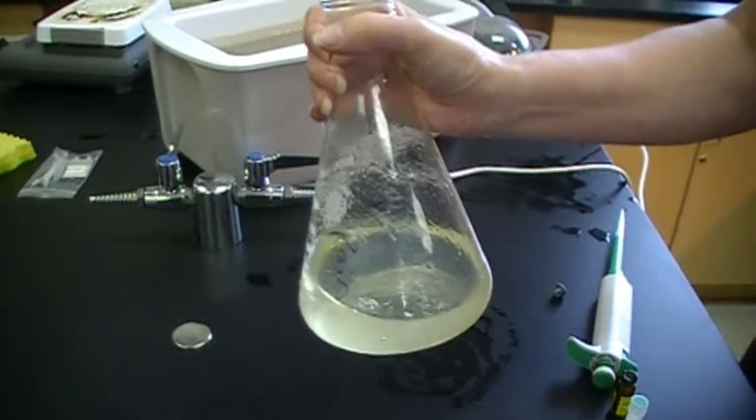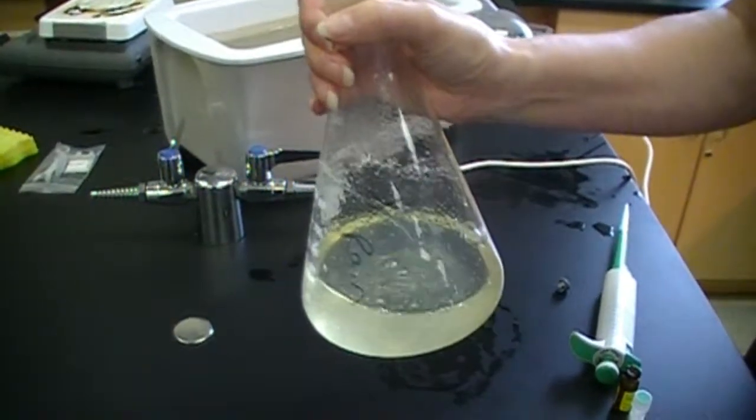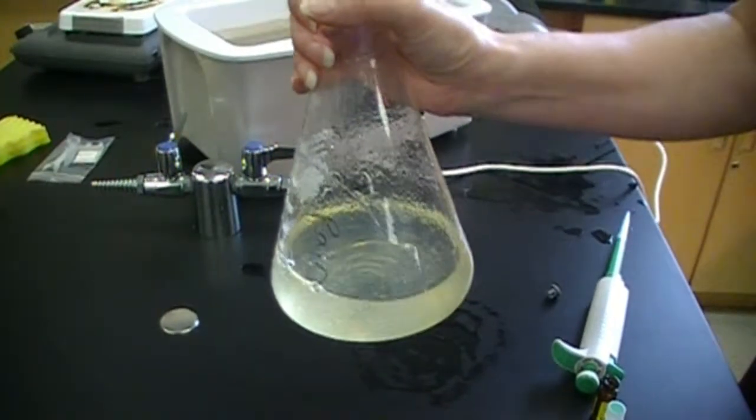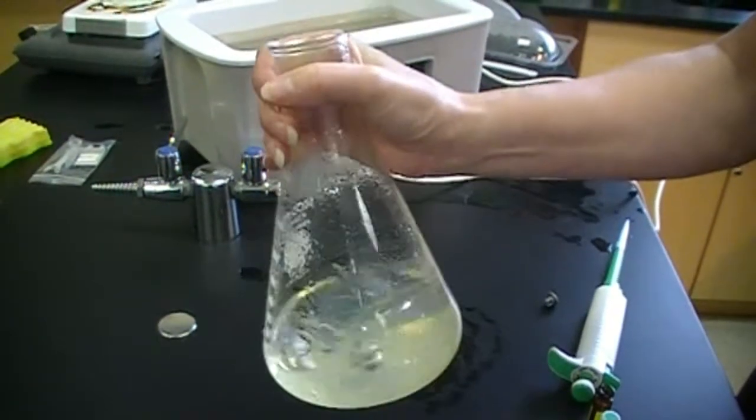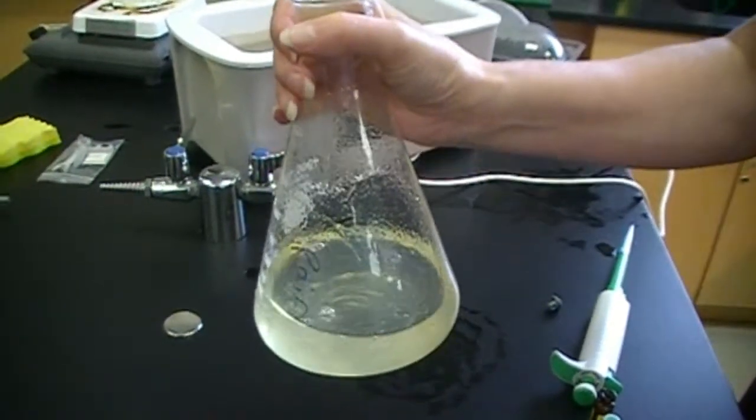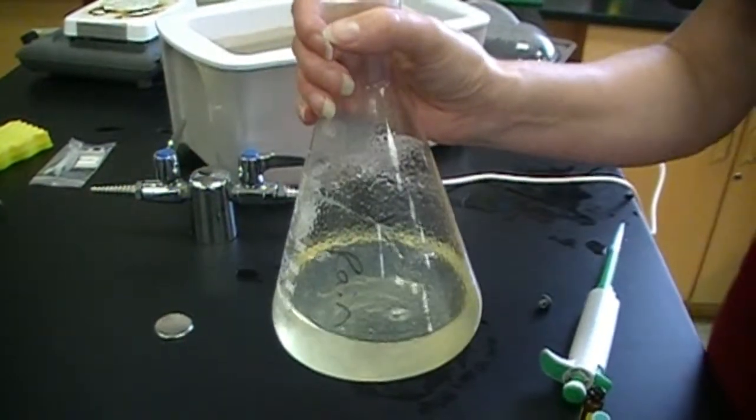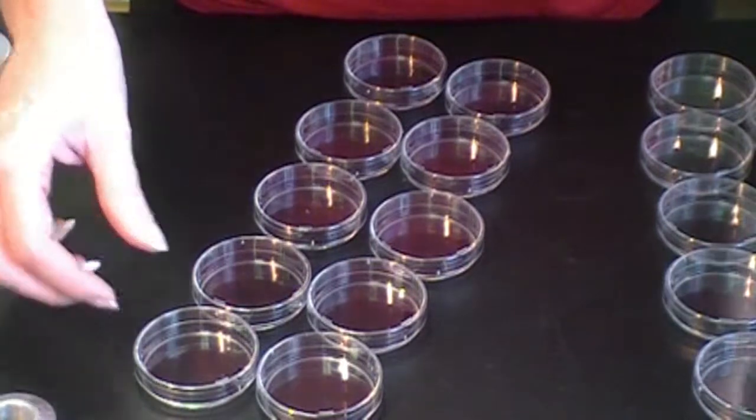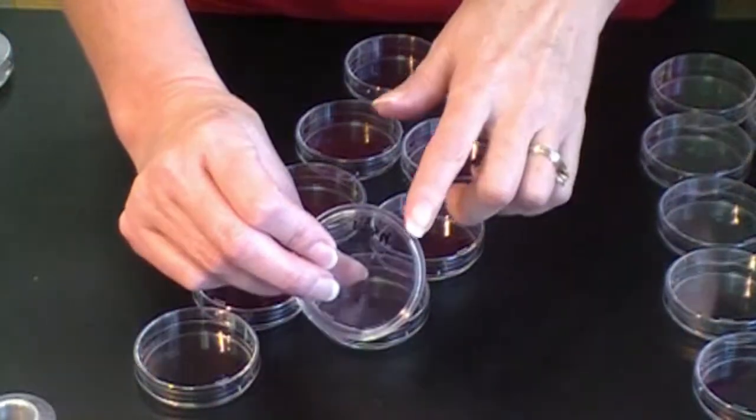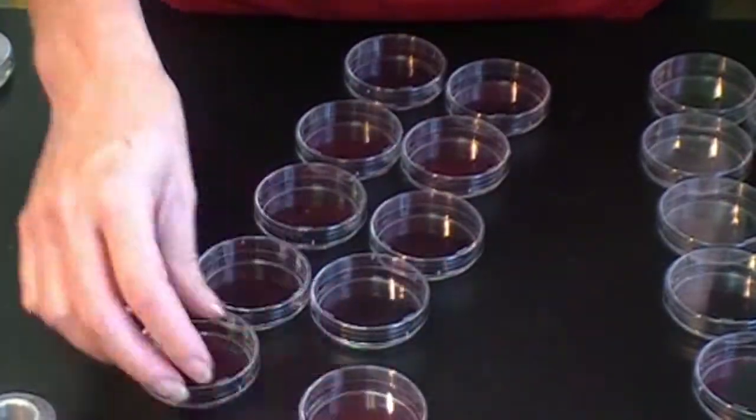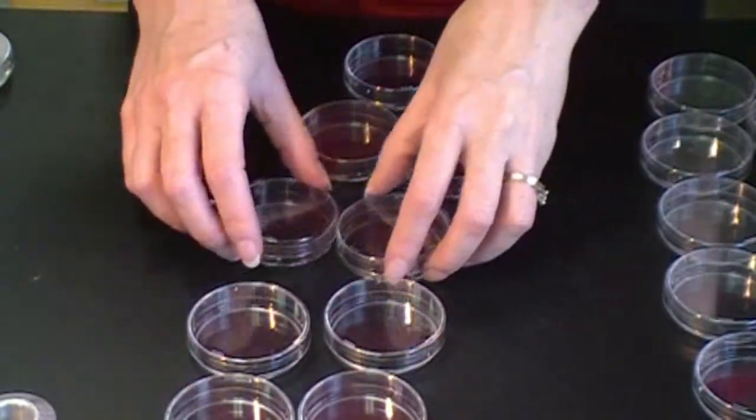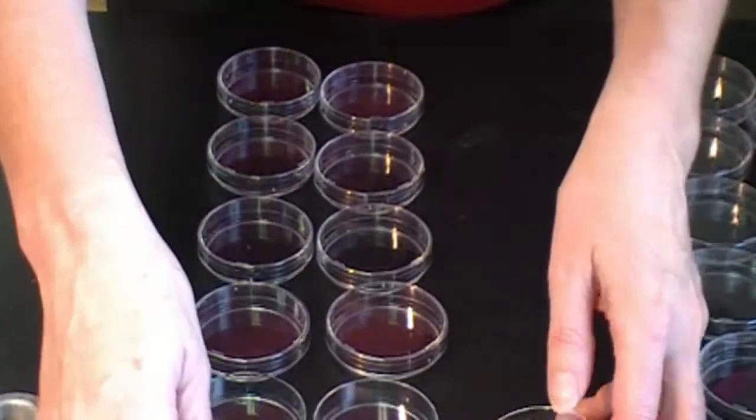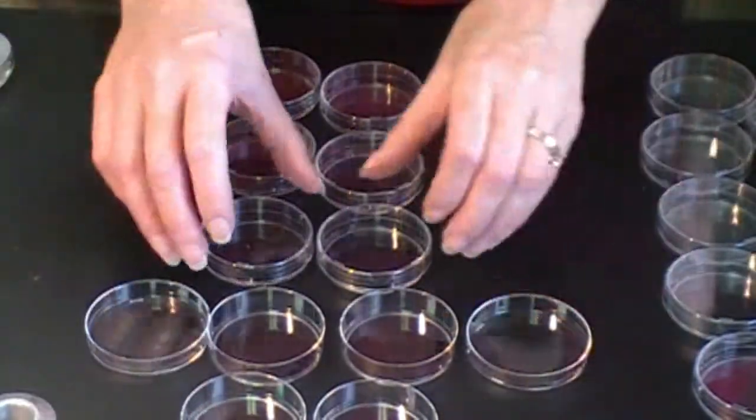And we're going to shoot for about 10 milliliters per plate. My rule of thumb is when I have enough to just barely cover the bottom, that's when I call it good. So, I'm going to head over and start pouring. Okay, so now we're going to pour the plates. As you can see, we've got our NGM on the bottom. And we're going to pour this batch all at one time. And so I am quickly going to lift the lids off and just set them right to the side.